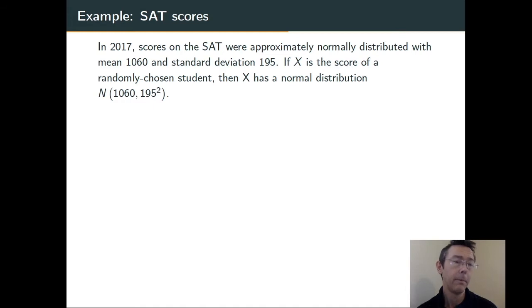Let's see an example. In 2017, scores on the SAT were approximately normally distributed with mean 1060 and standard deviation 195. So, if we go out and we select a student at random, one test taker at random, the random variable X, their score on that test, is going to have an approximately normal distribution with mean 1060 and variance 195².